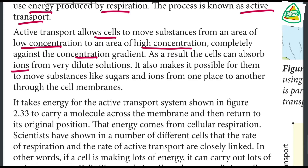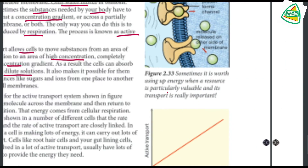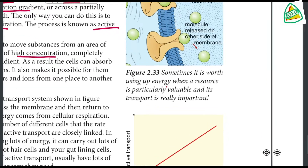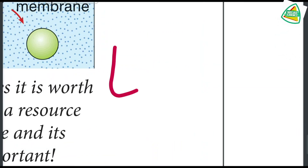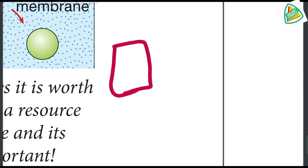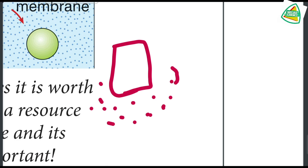As a result, cells can absorb ions from very dilute solutions. So if you have a cell in a dilute solution, active transport allows the cell to take up ions even when the outside concentration is lower.